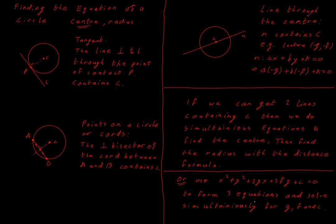That's what we need by way of introduction. These are the three different ways we'll have equations of lines going through the center, and the intersection of those lines is how we find the center. We then use the distance formula to get the radius. We also have the method of creating three simultaneous equations in G, F, and C. That's our toolkit for finding the equations of circles.